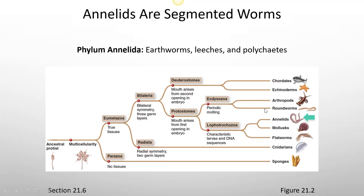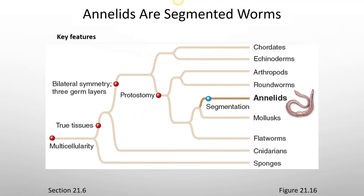The phylum Annelida includes earthworms, leeches, and polychaetes. Key features include segmentation, bilateral symmetry, three germ layers, and they are protostomes.